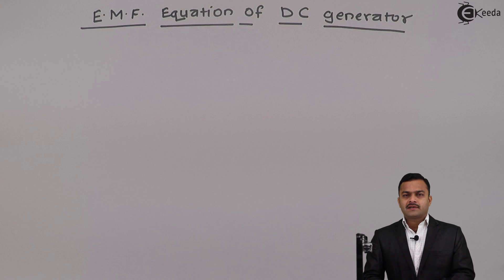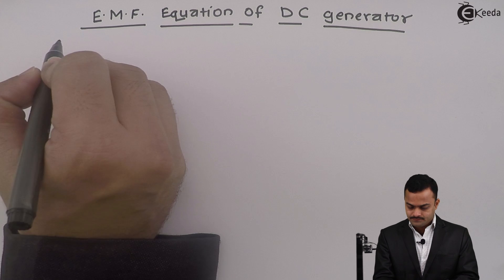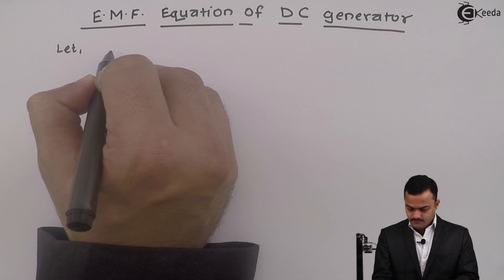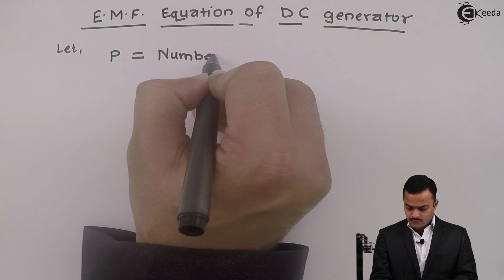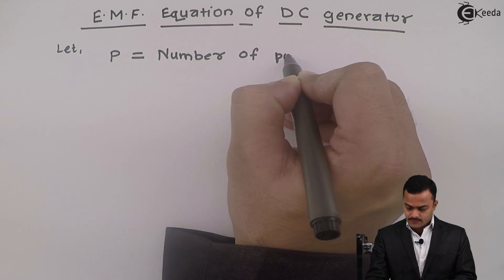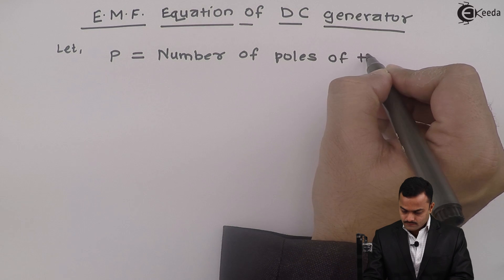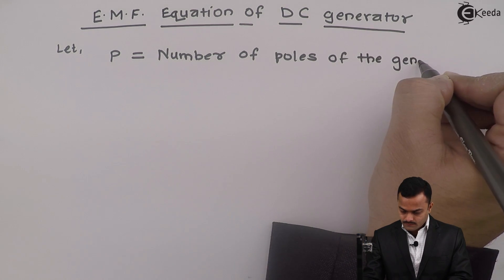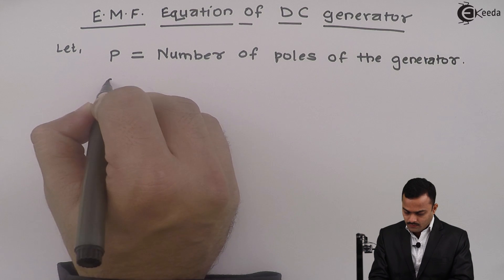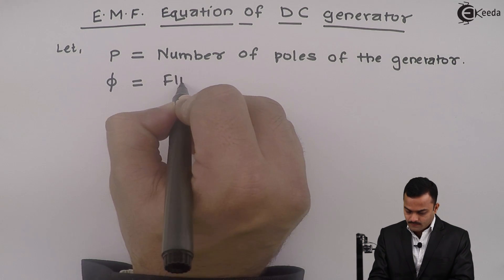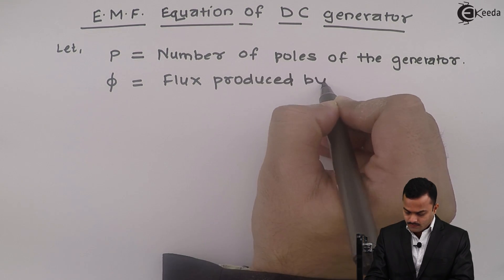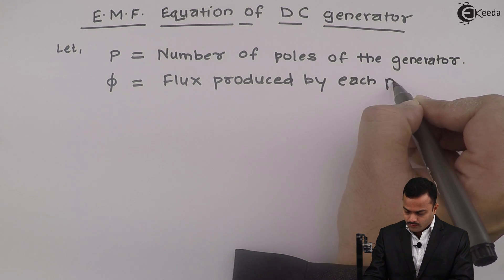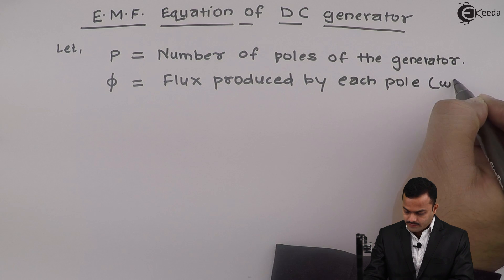For this, some terms need to be defined. So let's define each term. Let P equals number of poles of the generator, Phi equals flux produced by each pole.